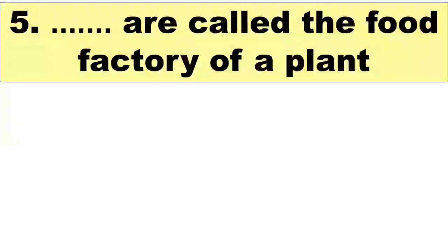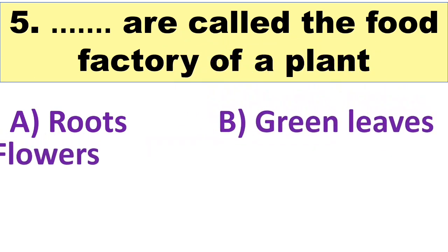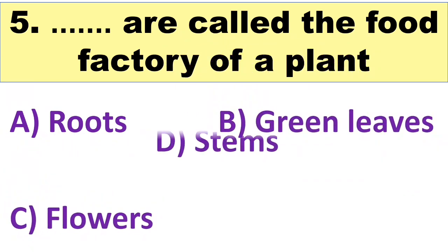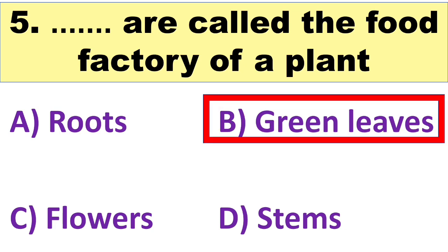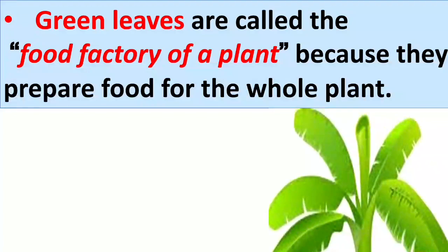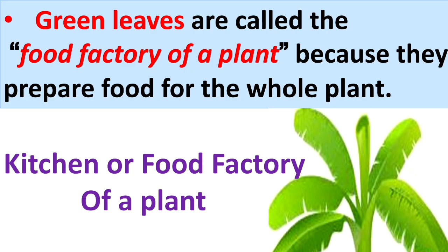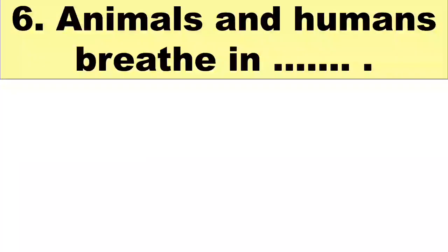The next question is: blank are called the food factory of a plant. Your options are A. Roots, B. Green leaves, C. Flowers, and D. Stems. The right answer is B. Green leaves. Green leaves are called the food factory or kitchen of a plant because green leaves prepare food for the whole plant.